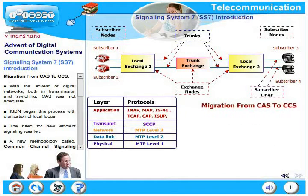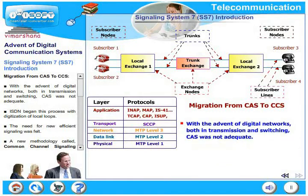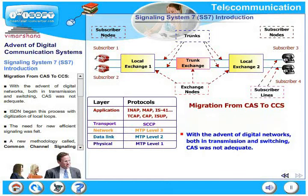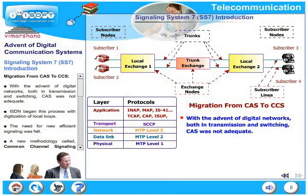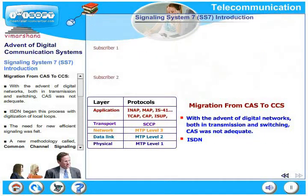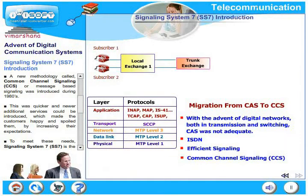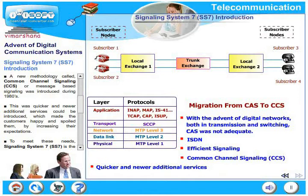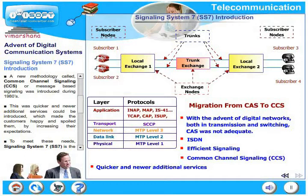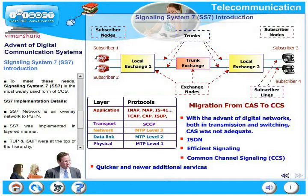With the advent of digital networks, both in transmission and switching, channel associated signaling was just not adequate. ISDN began this process with digitization of local loops, and the need for new efficient signaling was felt. A new methodology called common channel signaling, or message-based signaling, was introduced during the 1980s. This was quicker and newer additional services could be introduced. To meet these needs, SS7 is the most widely used form of CCS today.